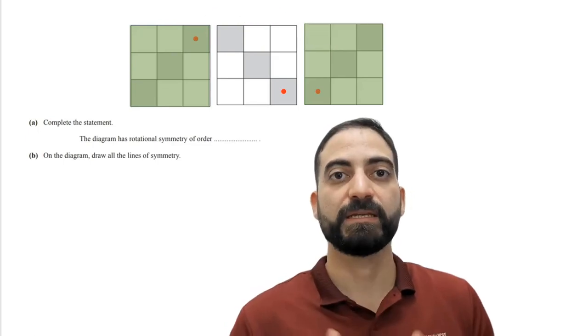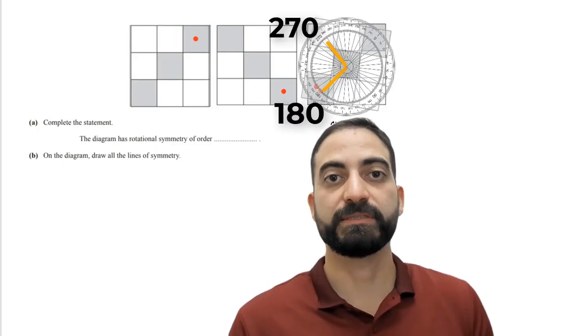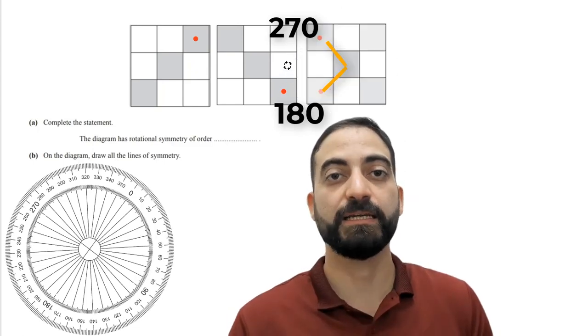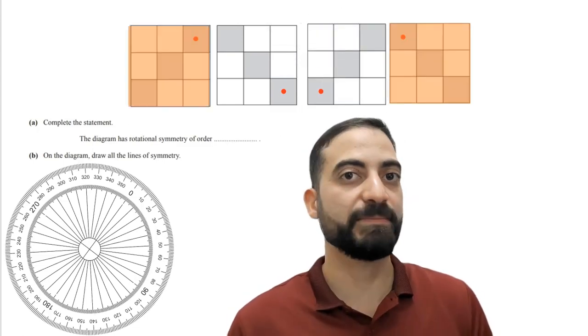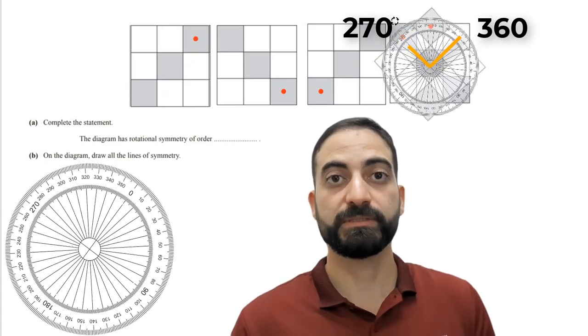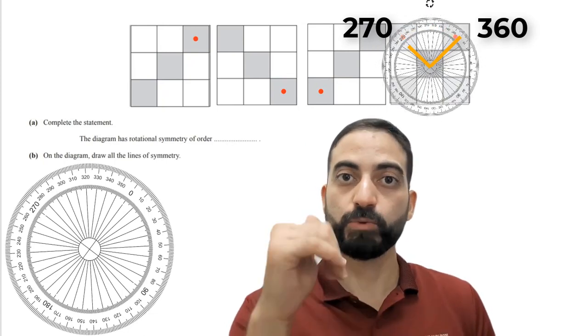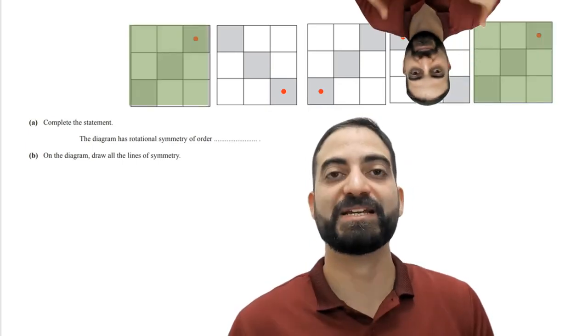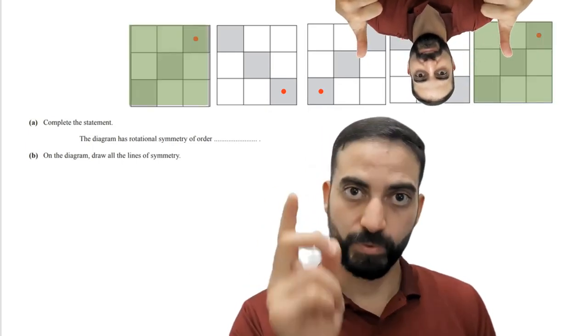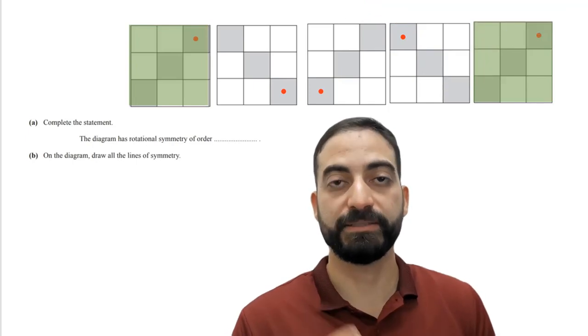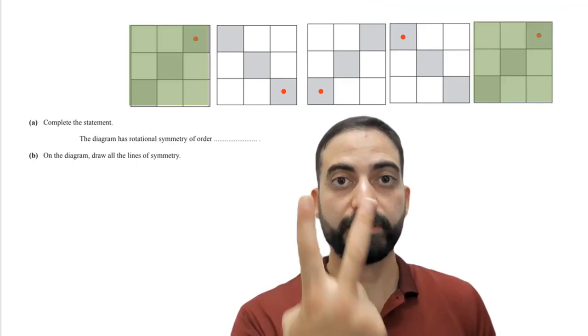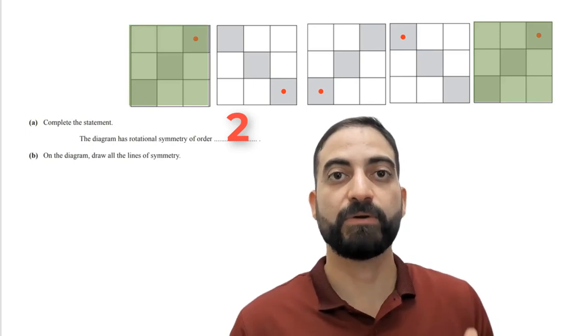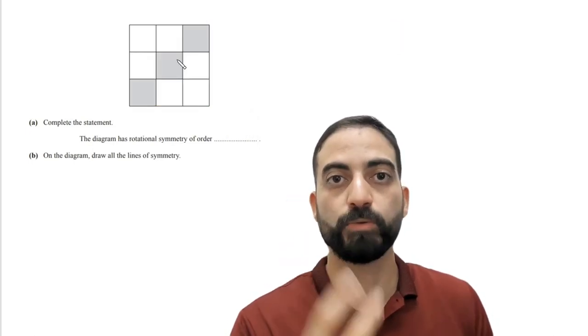When we round it from 180 to 270 degrees, we do not get the same basic shape. And when we round it from 270 to 360 degrees, we get the same basic shape, so we also put one on our hands. So the total becomes two. Therefore, the diagram has rotational symmetry of order two.